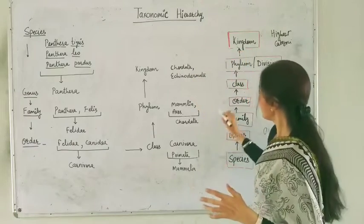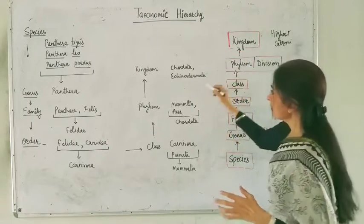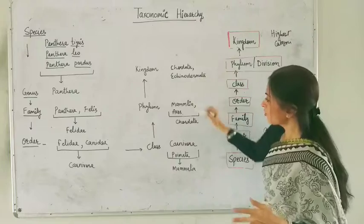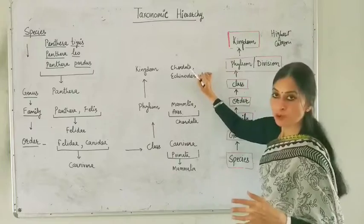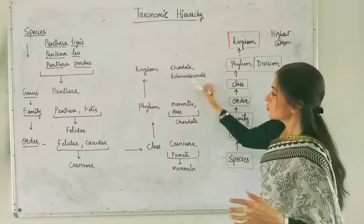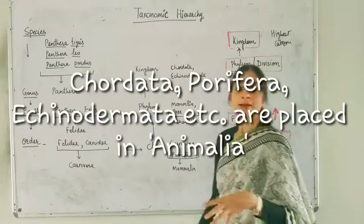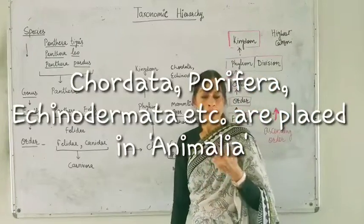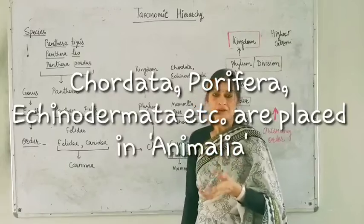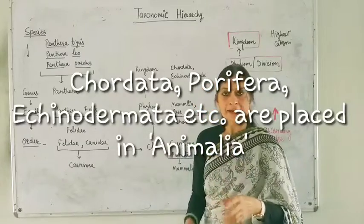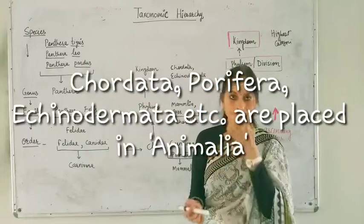Now, the related phyla — phyla is the plural of phylum — those that share common features are placed in the biggest and highest category known as kingdom. Here I have shown Chordata and other phyla like Conifera and Salentia, which are different phyla placed within a kingdom.